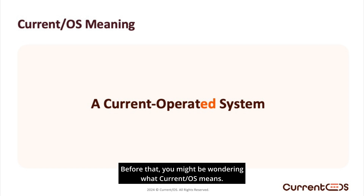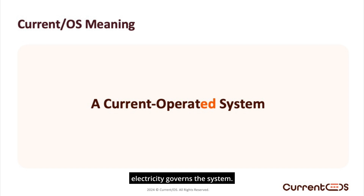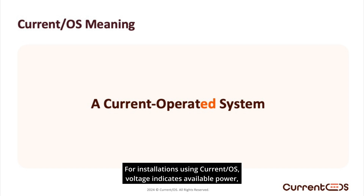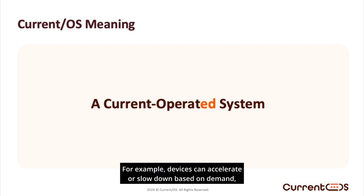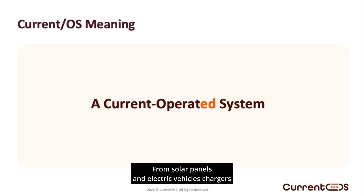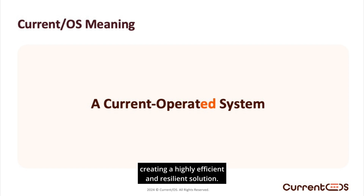Before that, you might be wondering what Current OS means. It stands for Current Operated System, reflecting its core principle: electricity governs the system. For installations using Current OS, voltage indicates available power, allowing devices to adapt their behavior dynamically. For example, devices can accelerate or slow down based on demand, manage their load efficiently, or feed power back into the grid. From solar panels and electric vehicle chargers to LED lights and electronics, all loads within the installation operate seamlessly together, creating a highly efficient and resilient solution.